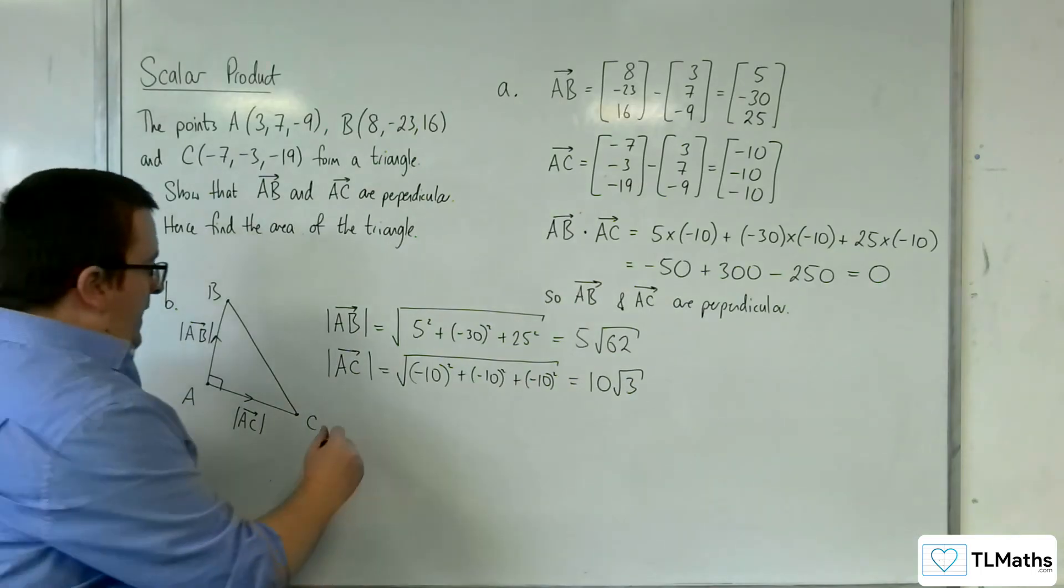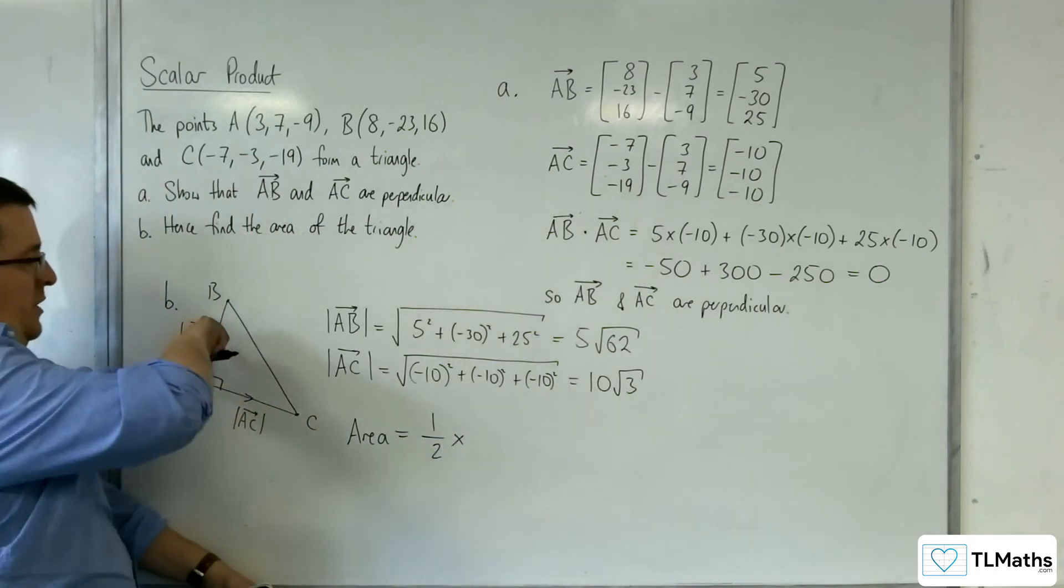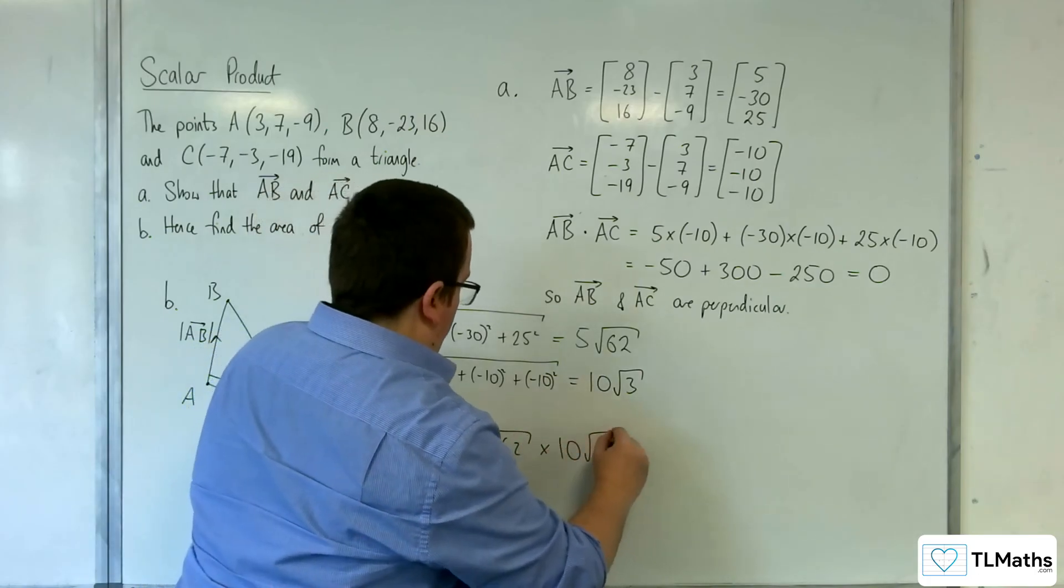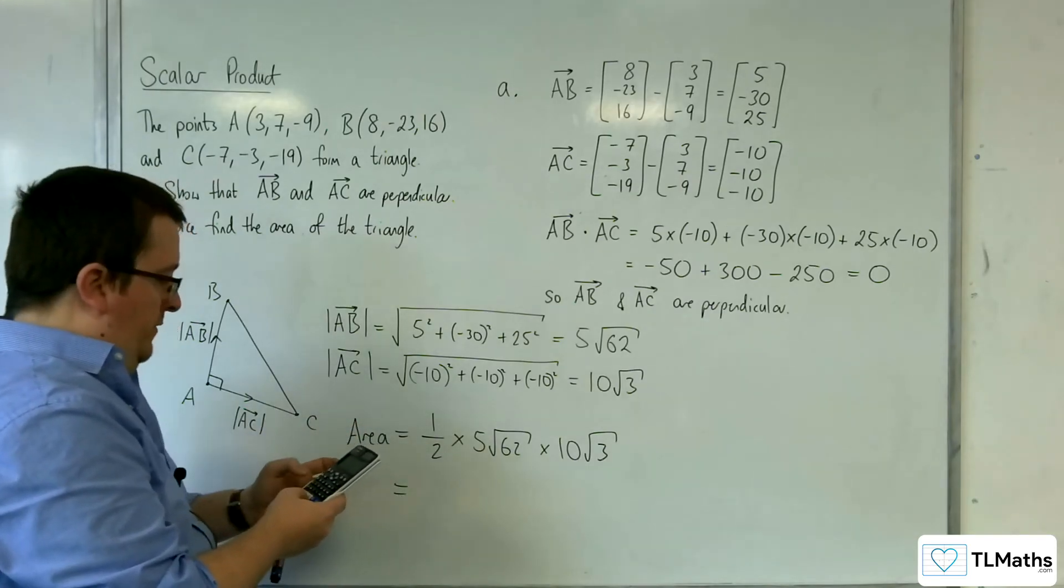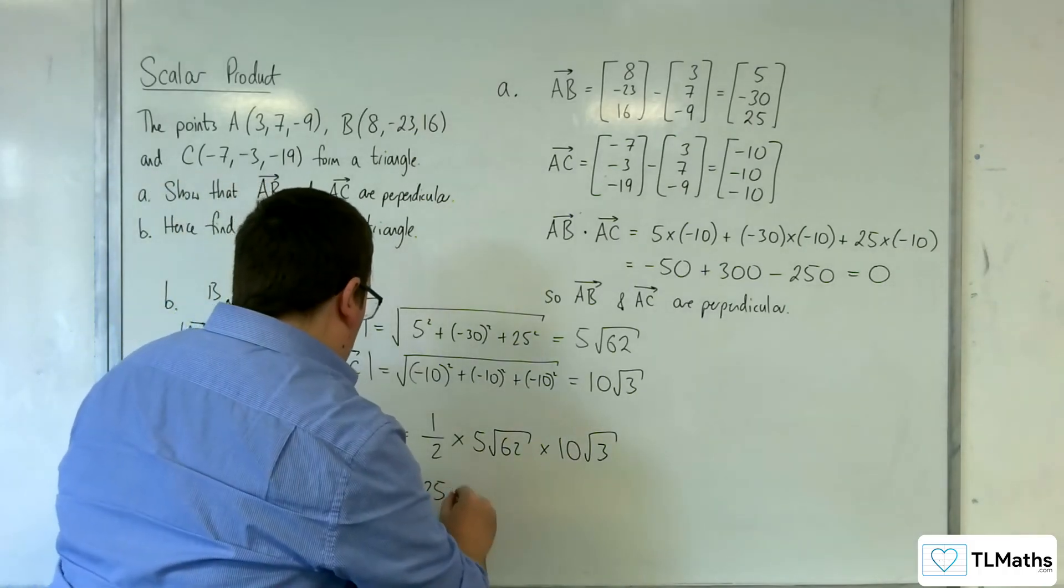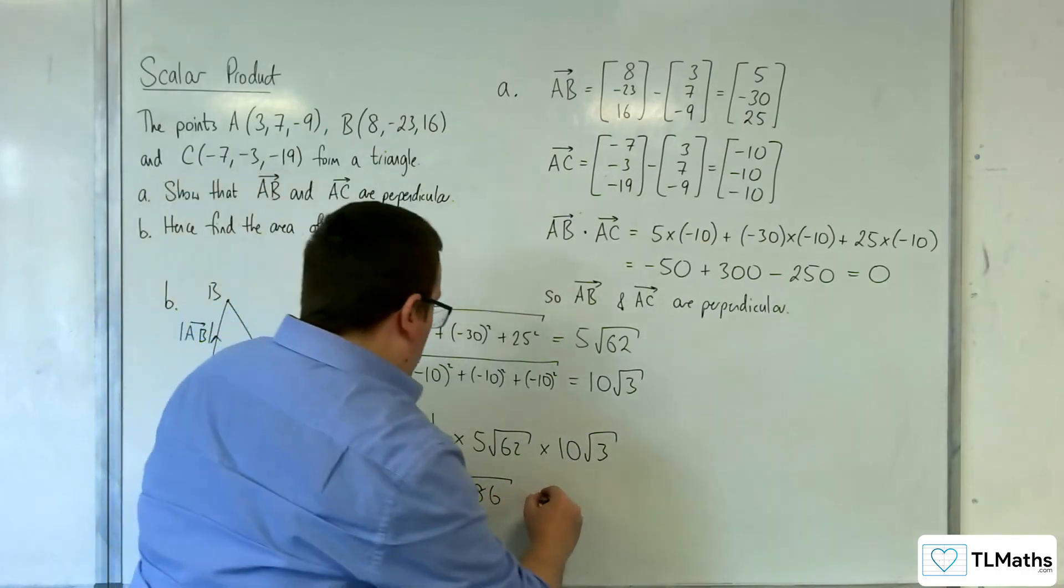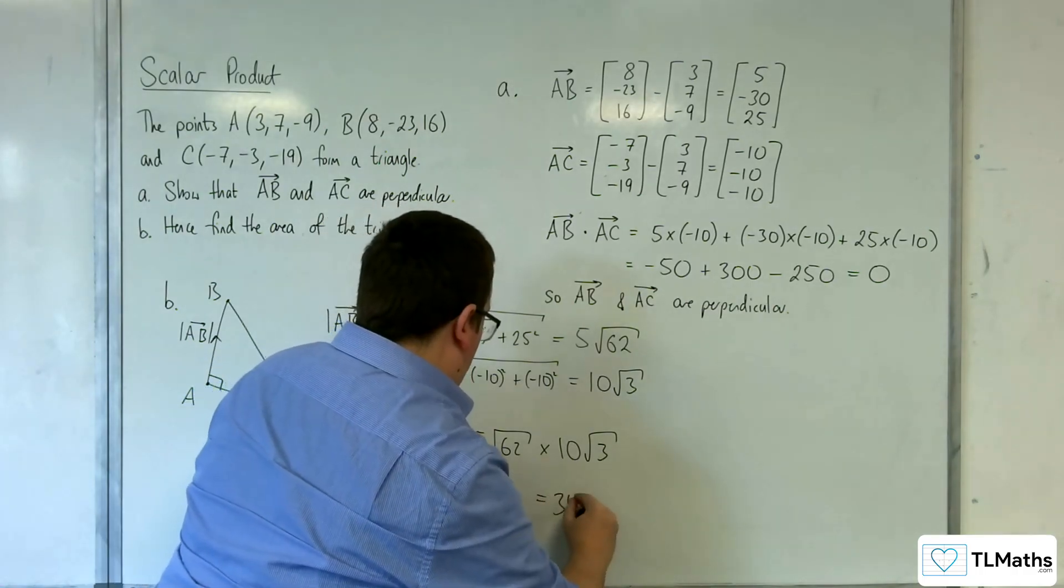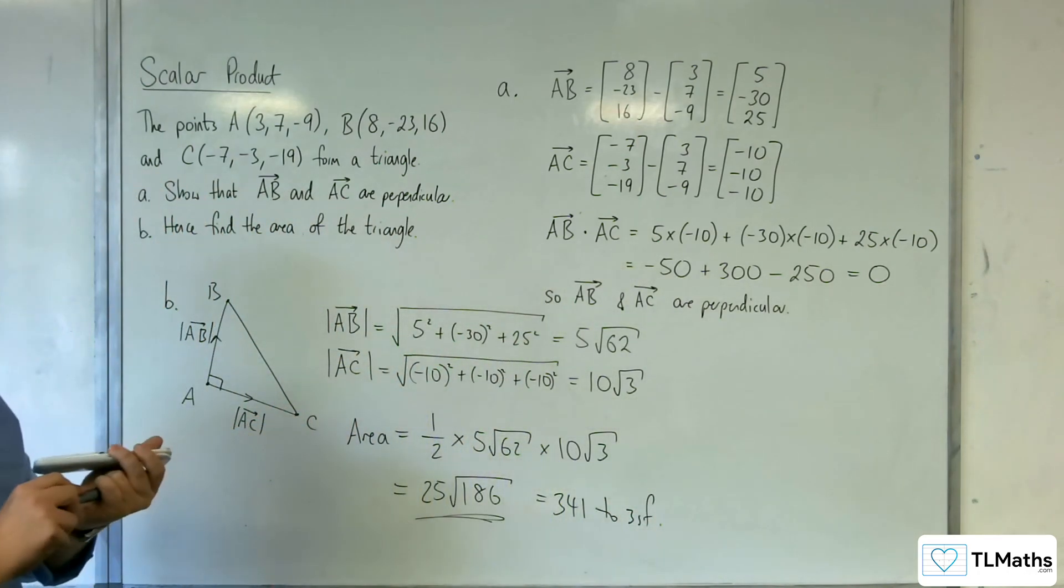So the area is equal to 1 half times AC times AB. So we've got 10 root 3 times by 5 times root 62, and then half that. So we get 25 root 186, which is, let's put it equal to 341 to 3 sig fig. More likely we'd be wanting just the exact answer for the area.